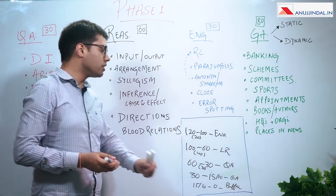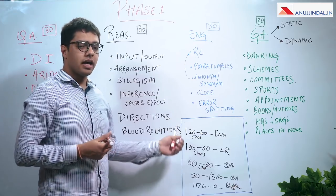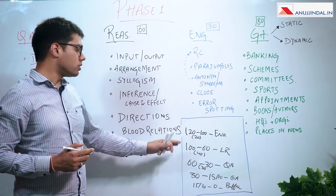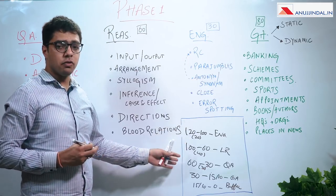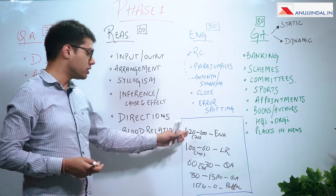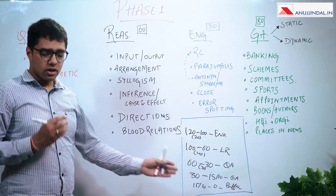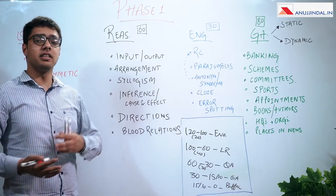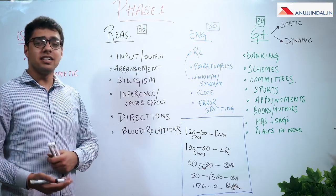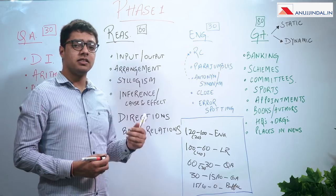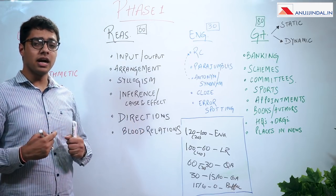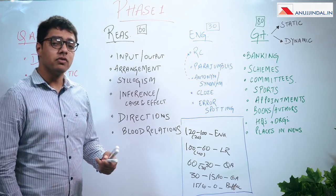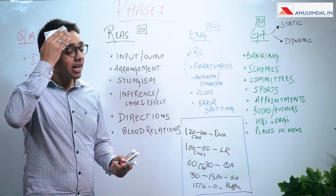If you are doing a paper like RBI Grade B, which is really competitive, these timings can be a little fluid, but you have to know what your timing is and cannot dynamically change it a lot unless something changes completely in how the paper is. You have to take these decisions in split seconds, and if you don't, you lose out on a lot of time without even realizing it.